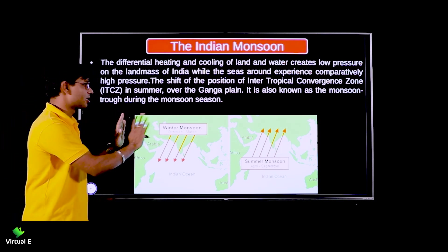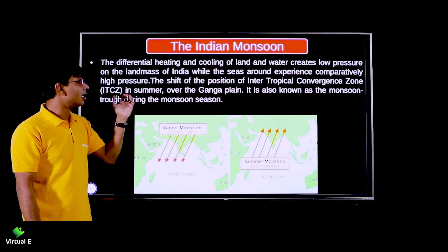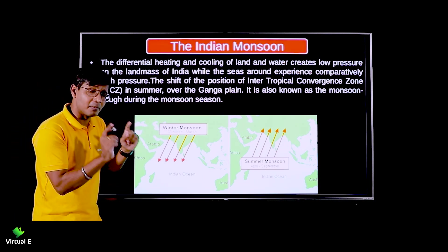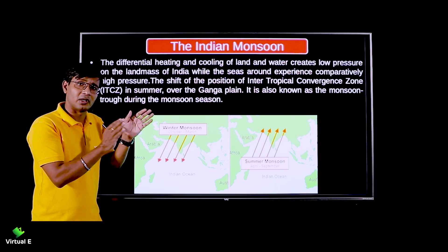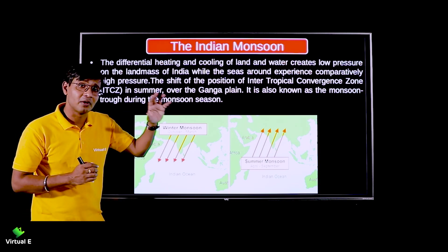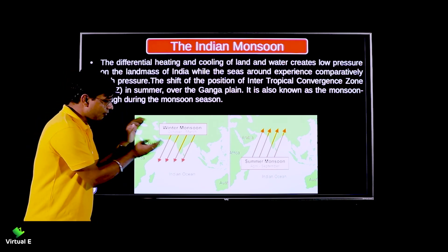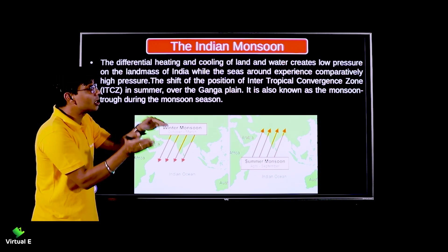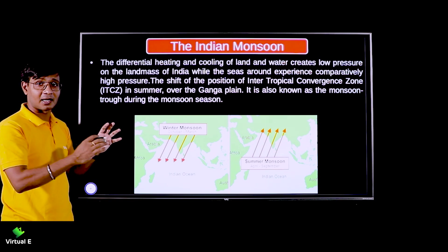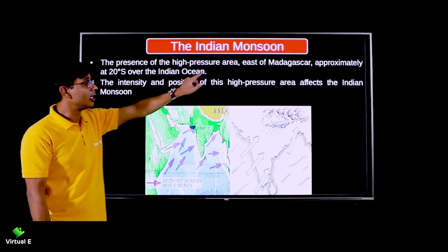Shift of the position of ITCZ - the Intertropical Convergence Zone - in summer over the Gangetic Plain. The ITCZ is normally at about 5 degrees north and 5 degrees south of the equator, where winds converge. It moves with the apparent movement of the sun. In summer, the sun moves north over India, so the ITCZ shifts all the way up to the Gangetic Plain, creating significant influence on monsoon.